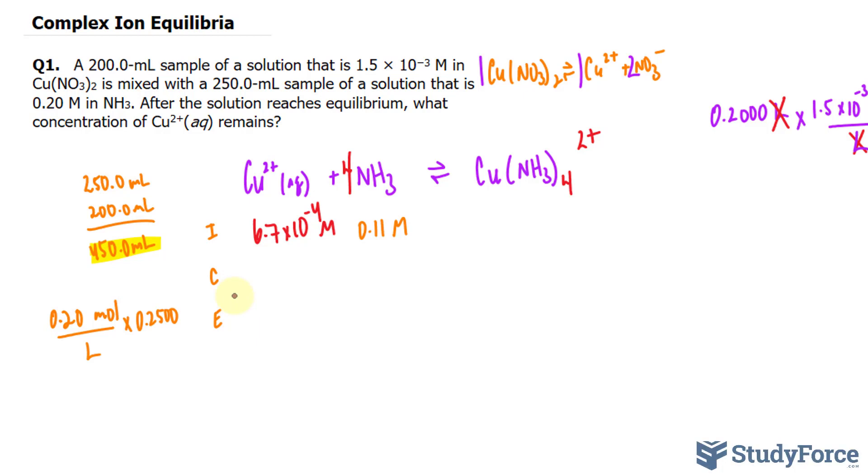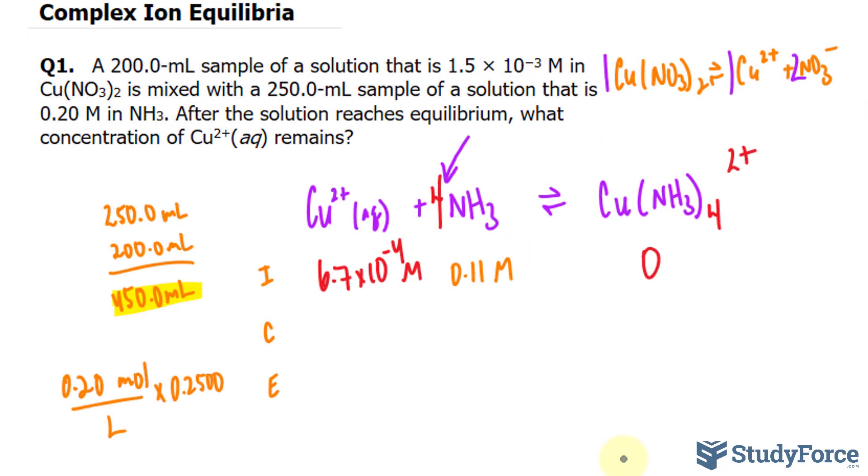Otherwise, it would be 6.666 repeating. And logically, the initial concentration of this stuff is nothing, so we'll write down 0. Now that we've filled these numbers in, since the equilibrium constant, if you take a look at this table,